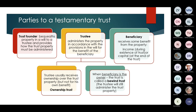The trustee usually receives ownership over the trust property — that is called an ownership trust. But when the beneficiary is the owner, the trust is called a bevent trust, though a trustee is still involved. The beneficiary, as the third party, receives some benefit from the property, either income during the existence of the trust or capital at the end. So you can be an income beneficiary or a capital beneficiary.